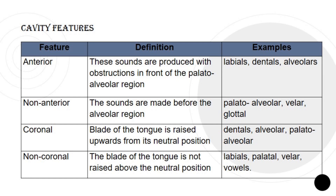Non-coronal: the blade of the tongue is not raised above the neutral position, and examples are labials, palatal, velar, and vowels.